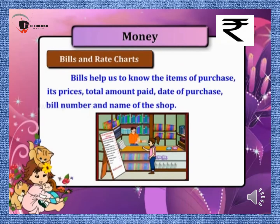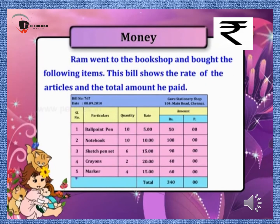Next topic is bills and rate charts. Do you know what bills or rate charts are? Have you ever seen a bill or a rate chart? Bills help us to know the items of purchase, their prices, total amount paid, date of purchase, bill number, and name of the shop. It is very important to ask for a bill whenever you buy something from the market. For example, Ram went to a book shop and bought the following items — this bill shows the rate of the articles and the total amount he paid.